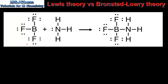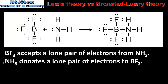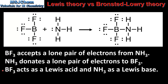In our next example we have the reaction between BF3 and NH3 to produce an adduct, BF3NH3. BF3, boron trifluoride, accepts a lone pair of electrons from NH3, and NH3 donates a lone pair of electrons to BF3. Therefore boron trifluoride acts as a Lewis acid and ammonia as a Lewis base. This reaction can be described in terms of Lewis theory but not in terms of Bronsted-Lowry theory, because the reaction does not involve the transfer of protons.